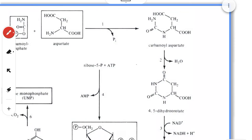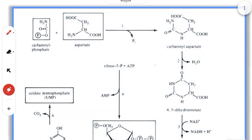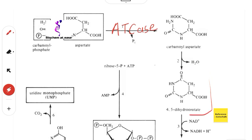Carbamoyl aspartate then undergoes a dehydration reaction, also called a ring closure reaction, in which a hexagonal ring is formed. The OH from the carboxylic acid group and one H are released as H₂O, forming a molecule of 4,5-dihydroorotate. This reaction is catalyzed by the enzyme dihydroorotase.